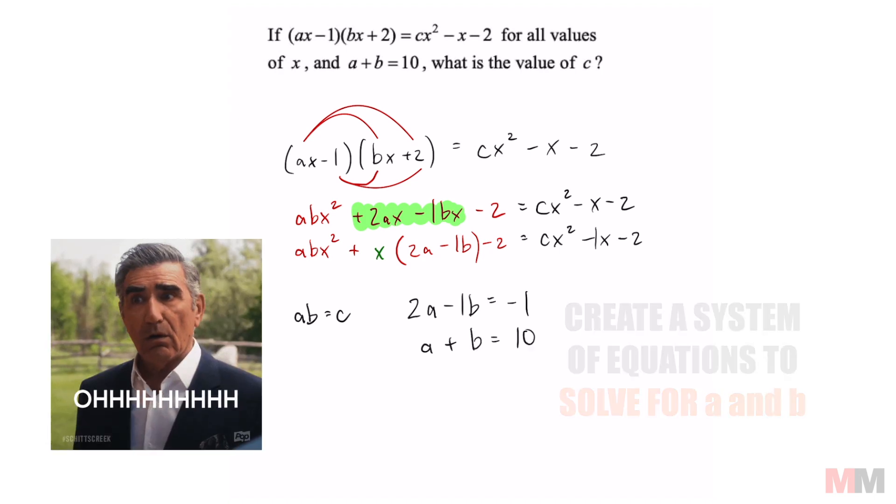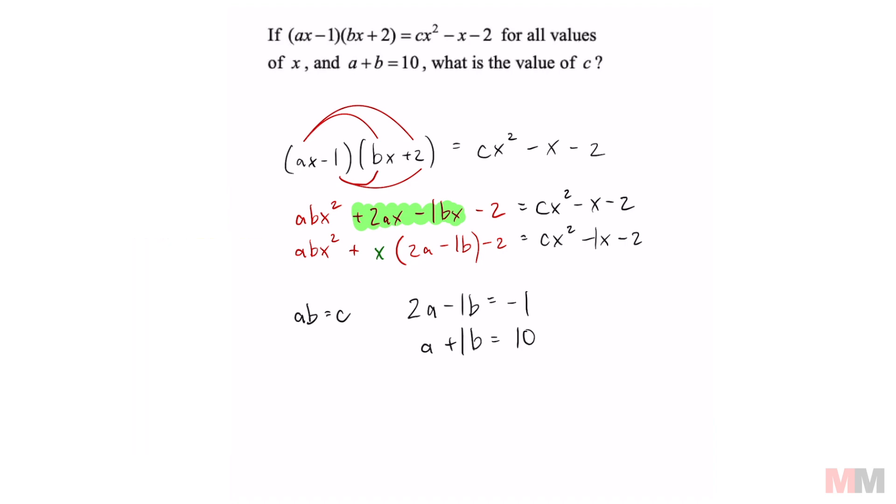And luckily we don't have to do too much work because you can see that the b terms are going to cancel by elimination. We get 3a equals 9, divide by 3. Now we got a equals 3.